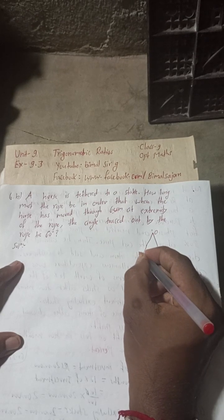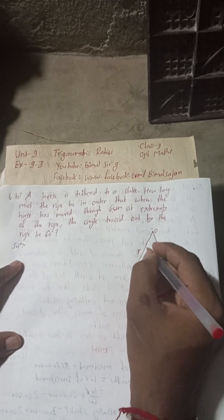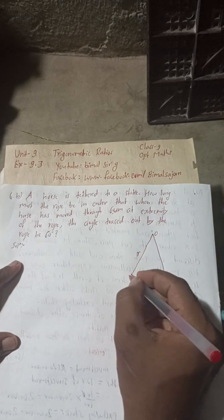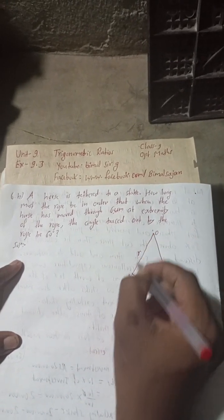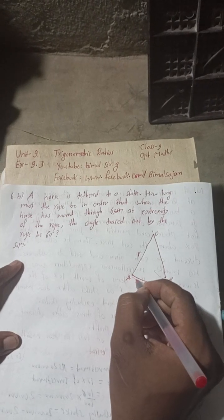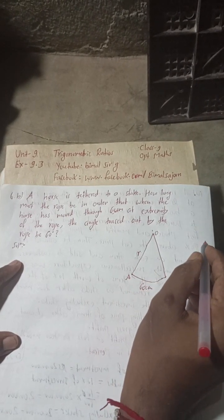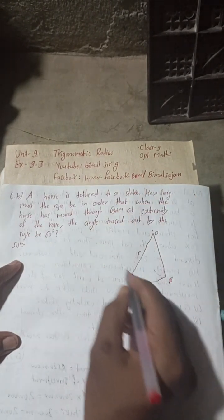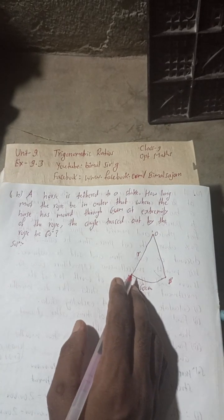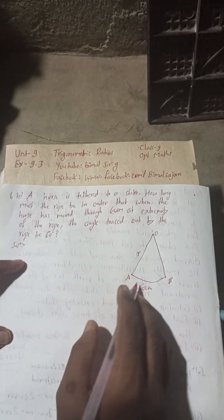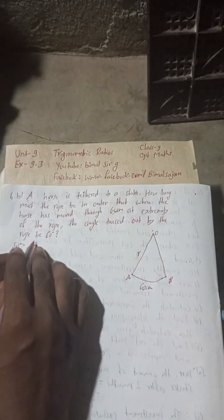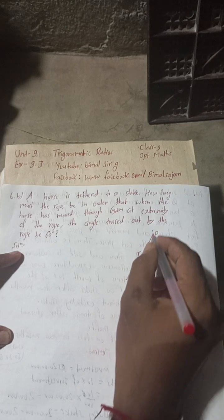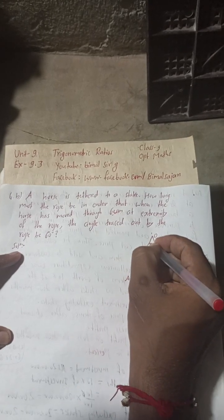This will form one circle with center O, and this radius R will be the rope length. This is A, O, and this is B. The horse is tied here and will move this way, and when you take a complete rotation it will make one circle. The angle traced out by the rope is 60 degrees.